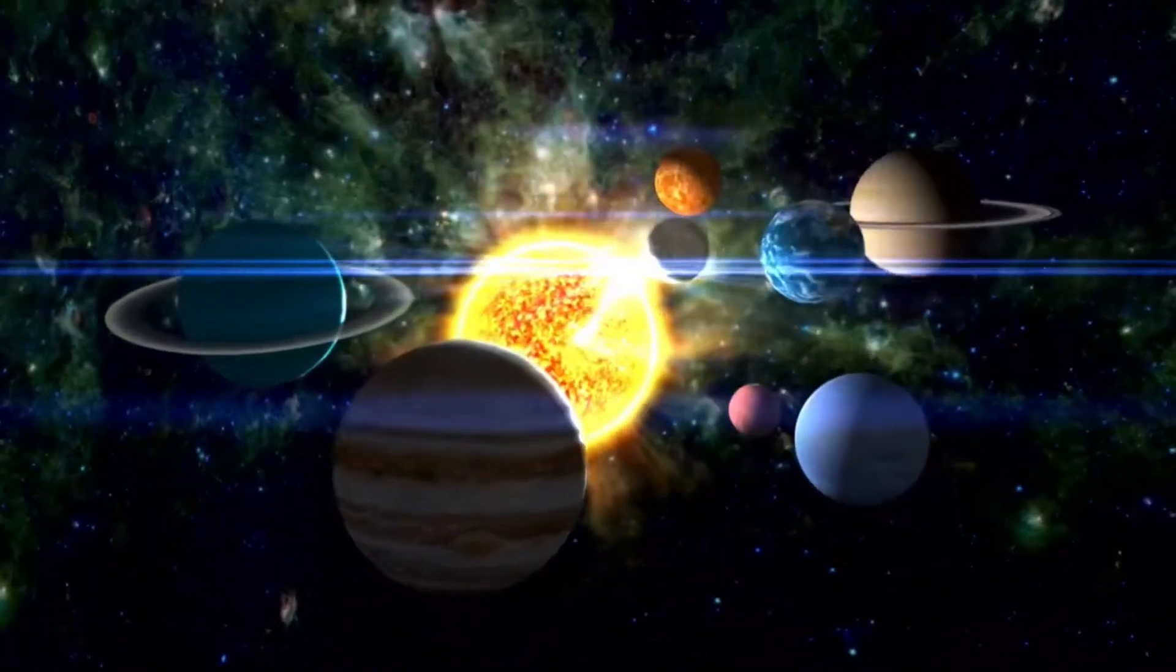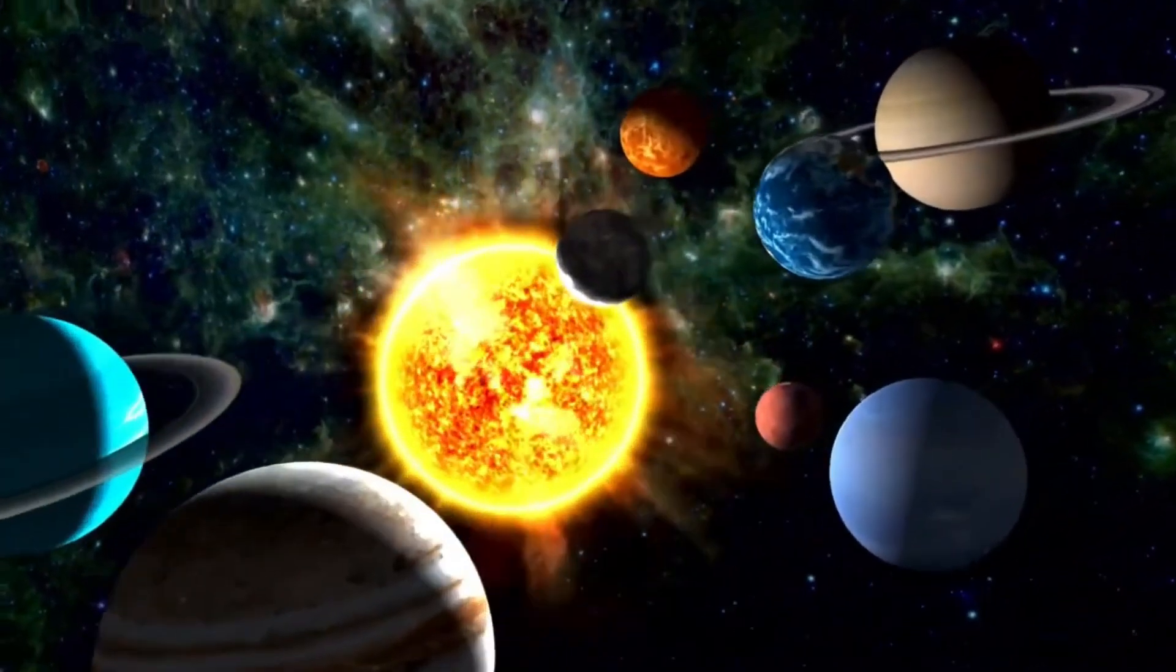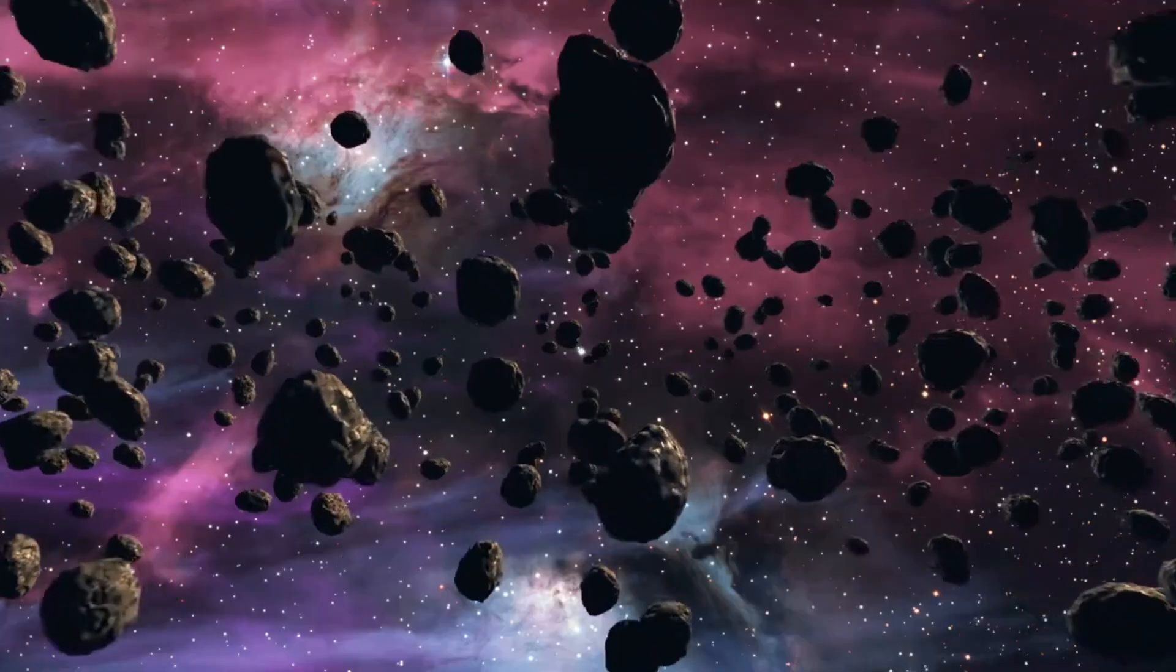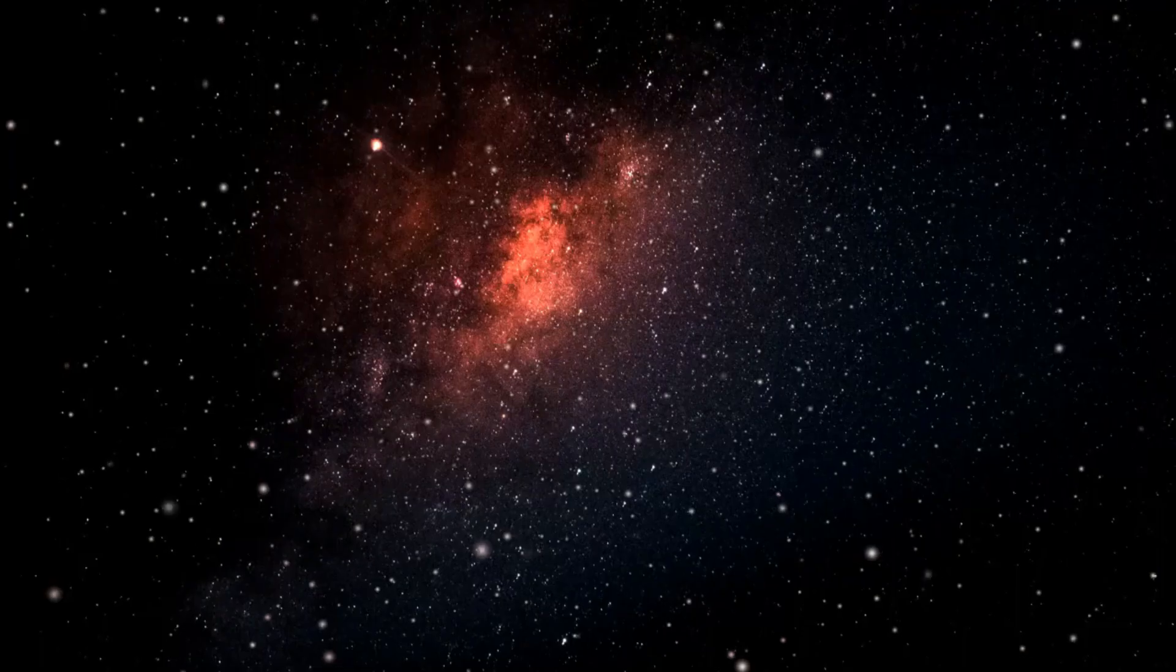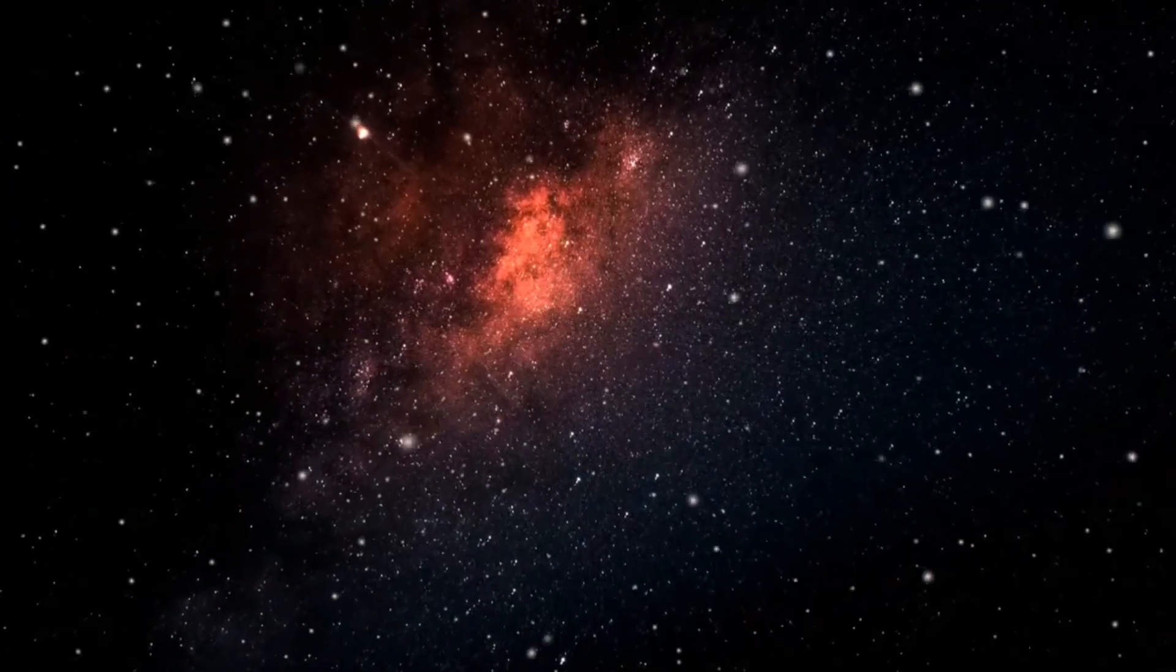The solar system is a fascinating place where the sun reigns as the center of this cosmic neighborhood. In addition to the eight main planets, we find asteroids, satellites, meteors, comets, and five dwarf planets, which also play important roles in the functioning of this vast system.